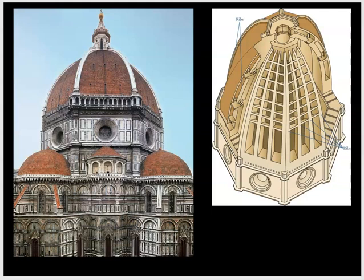This was a brilliant solution and the reason Brunelleschi won the contest to complete the dome. He added eight strong ribs creating geometric divisions on the exterior of the dome to support it, basically acting like buttresses to help the dome maintain its shape. These ribs were held in position by linking them up to the lantern at the very top — a brilliant solution to a difficult architectural problem.